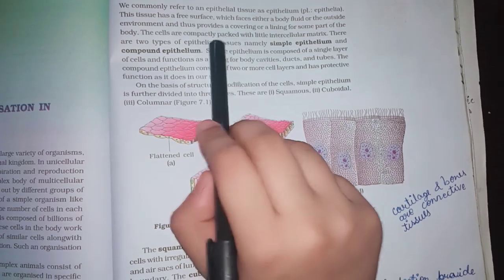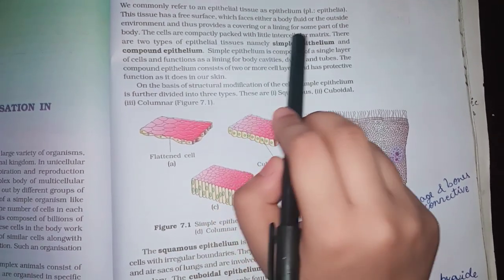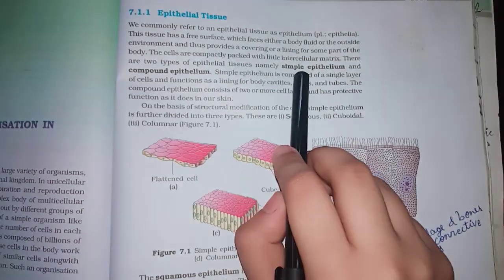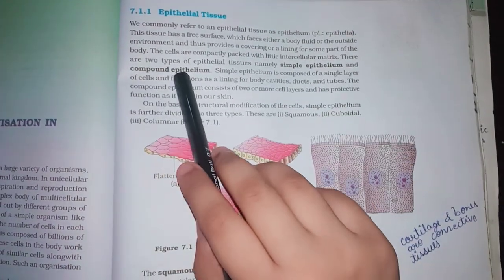The cells are compactly packed with little intercellular matrix. There are two types of epithelial tissues namely simple epithelium and compound epithelium.